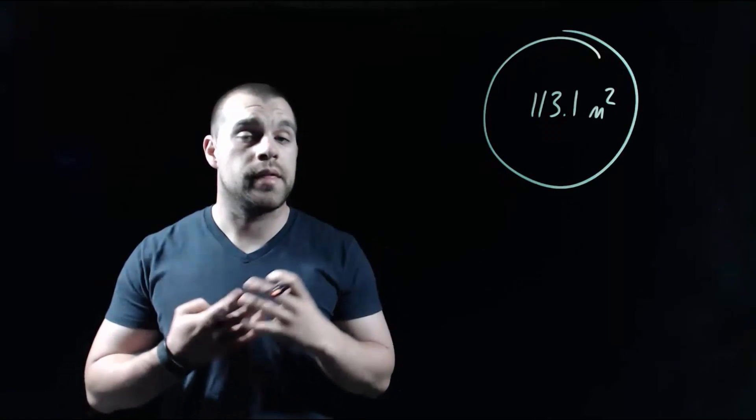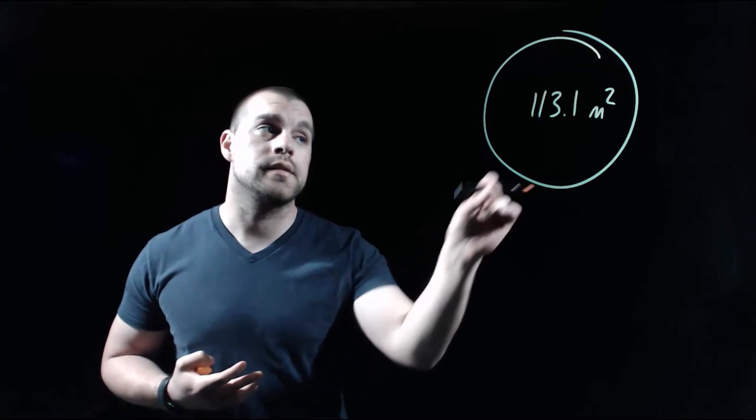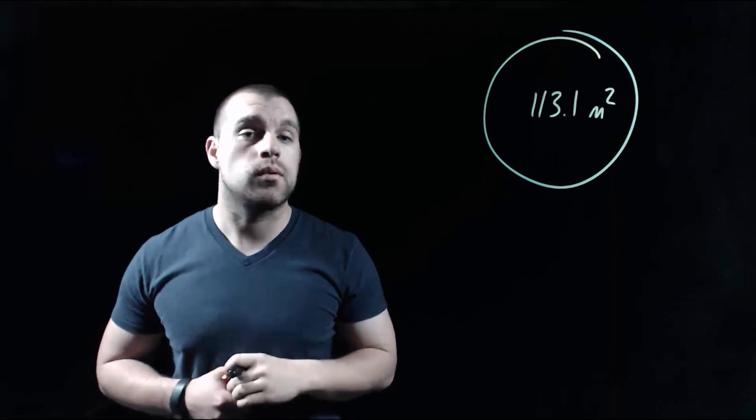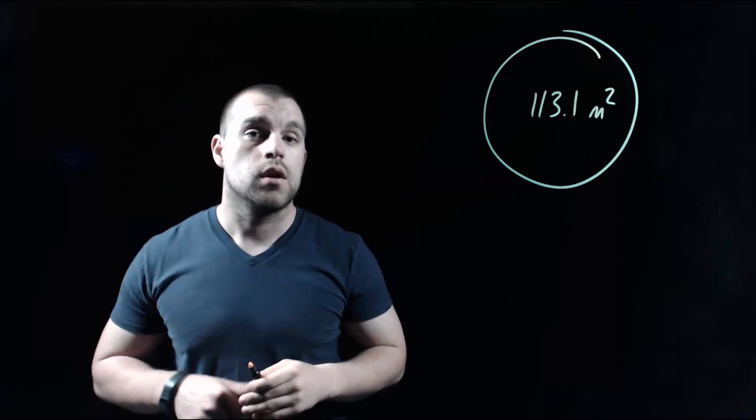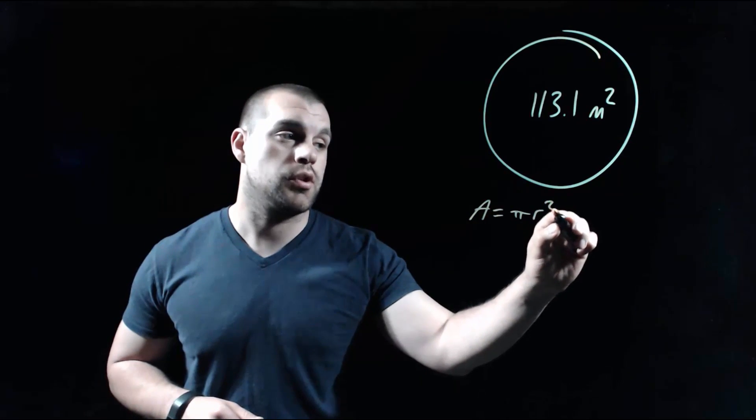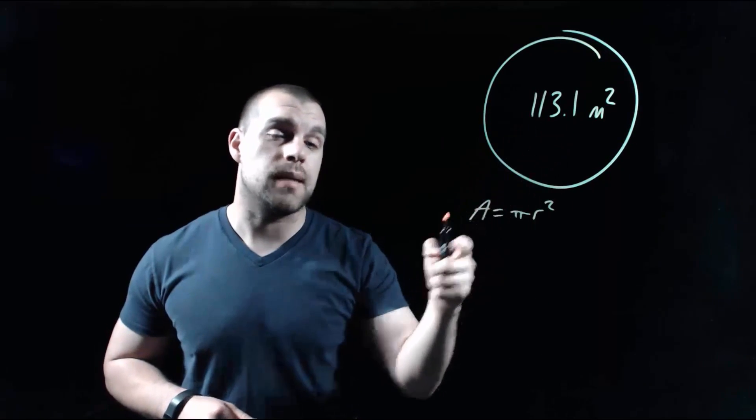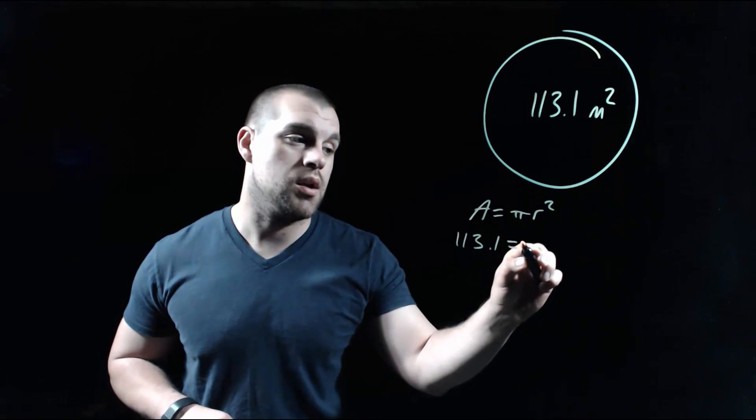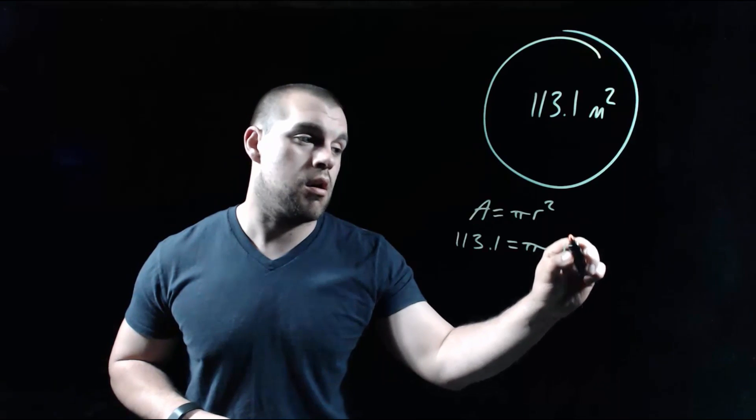In this example, we're given our circle, but this time we're told what the area is. It's 113.1 meters squared, and what we want to do is we want to find the radius of our circle. So remember the area formula is A equals pi times r squared. We're given the area this time, so I'm going to fill that in for my A value. So 113.1 equals pi times r squared.